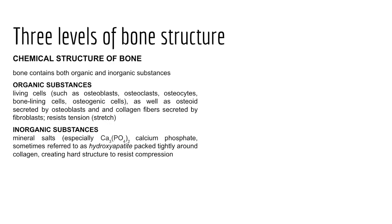The third level of bone structure is chemical composition. Bone has organic and inorganic substances. Organically, bone consists of living cells and osteoid — collagen fibers secreted by osteoblasts — which helps resist tension. Inorganically, bone is composed of mineral salts: calcium and phosphate forming a compound called hydroxyapatite that packs tightly around collagen, plus fluoride, sodium, potassium, and magnesium. The inorganic structure creates a hard, durable structure to resist compression.